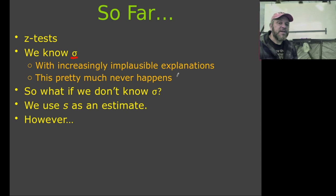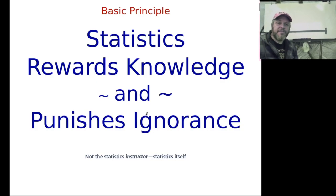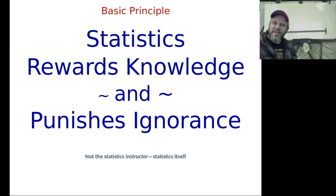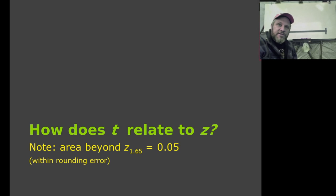That never really actually happens. Since we almost never know the population standard deviation, we have to use the sample standard deviation — just the thing we calculate using the standard deviation formula from our data. We have to use the sample standard deviation as an estimate of the population standard deviation. However, here's a basic principle of statistics: statistics rewards knowledge and punishes ignorance. Statistics does not care about your feelings. Statistics doesn't care if we had good intentions. If you get it wrong, you get it wrong.